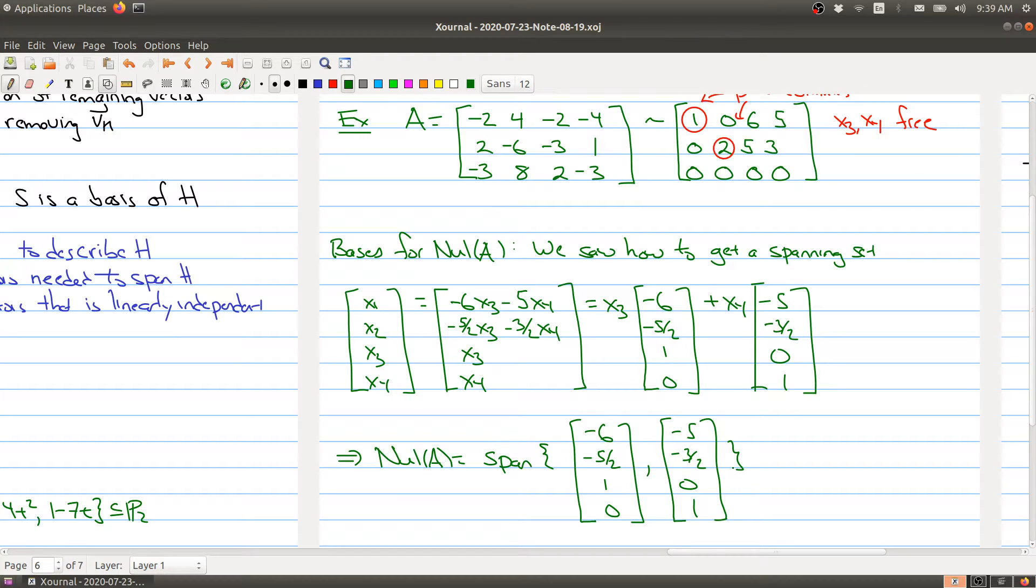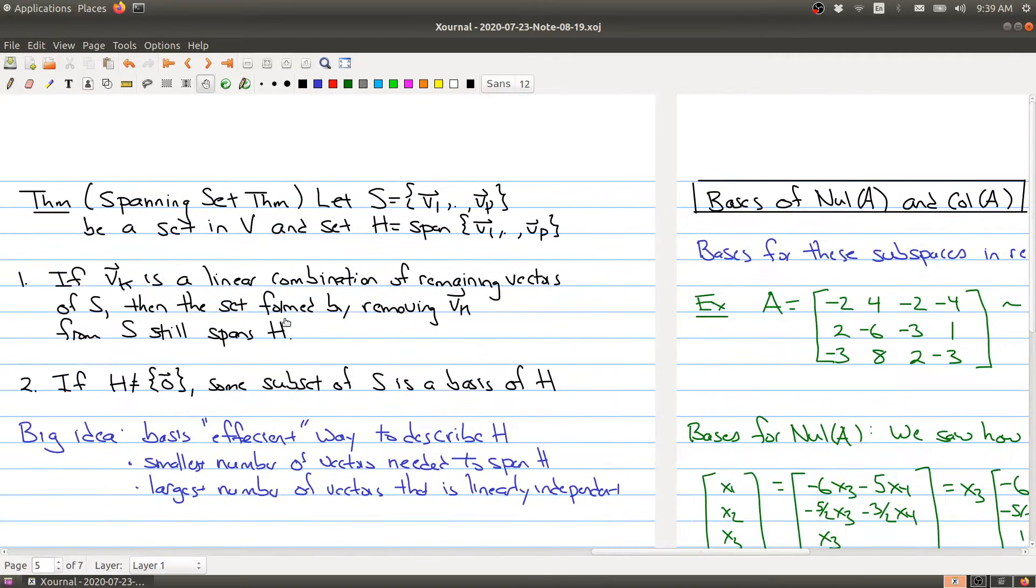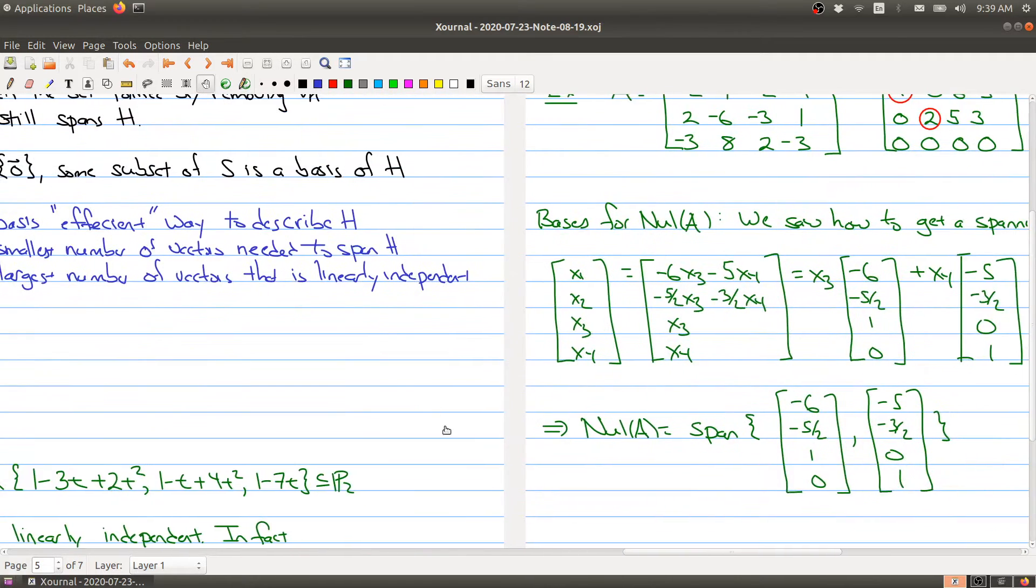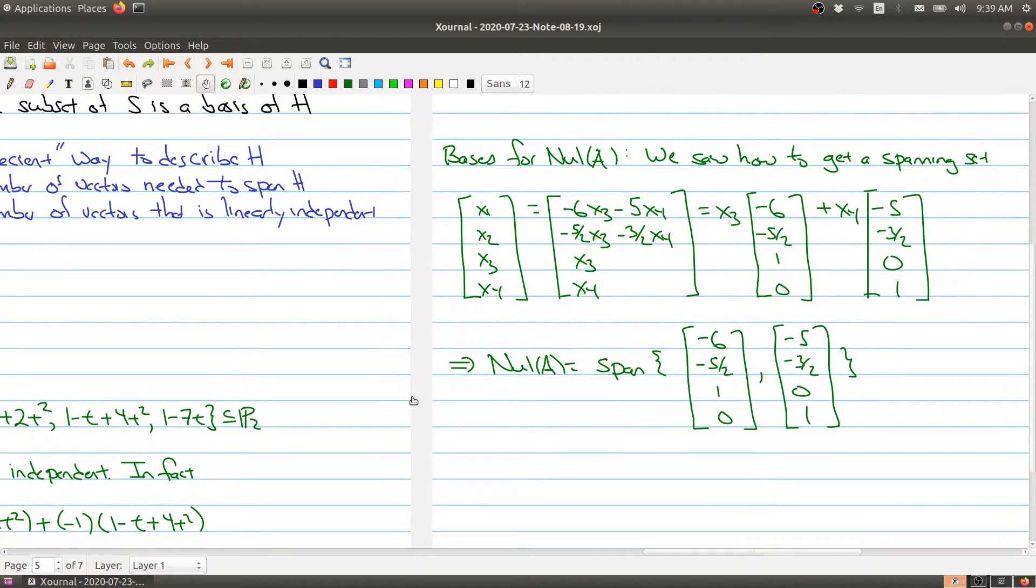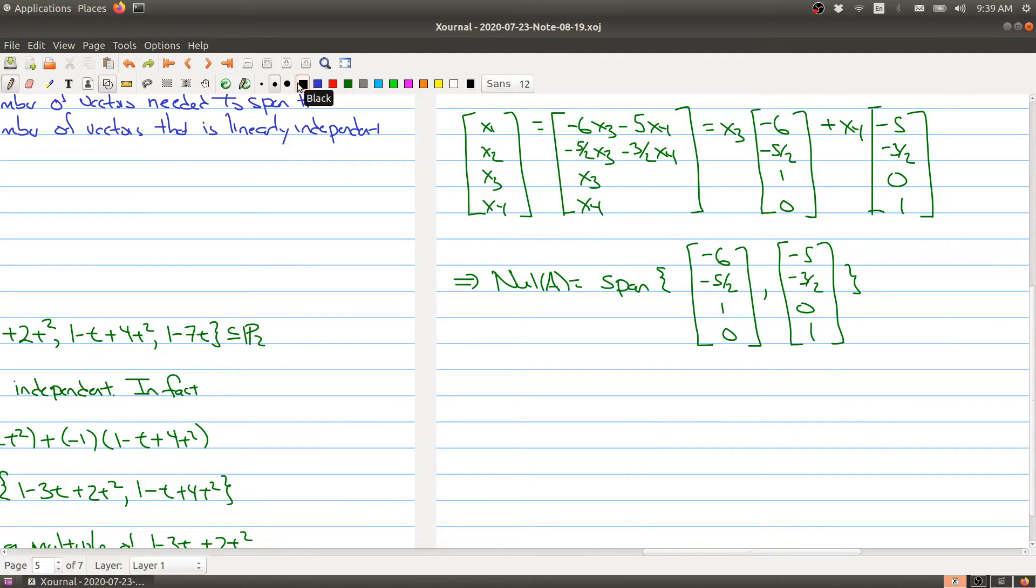And now our new thing here is that this is a spanning set for the null space. Now the spanning set theorem says that once you have a spanning set, you have to decide which things to throw away. You have to throw away the linearly dependent things. And once you do that, you actually have a basis.